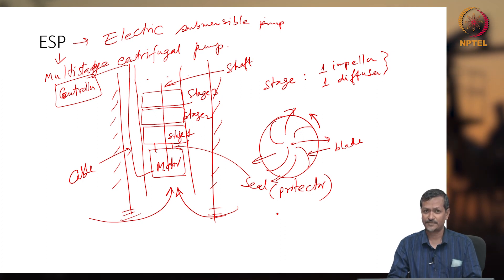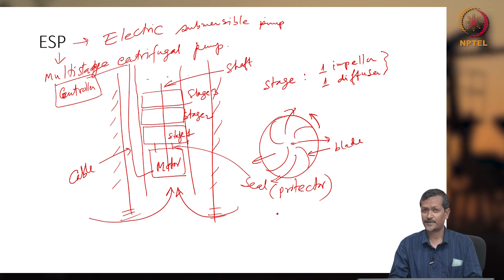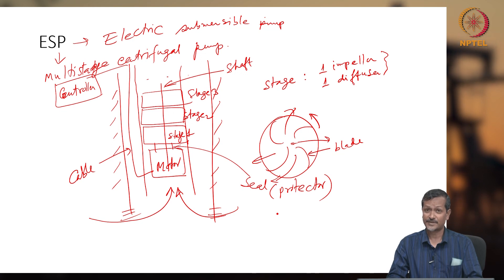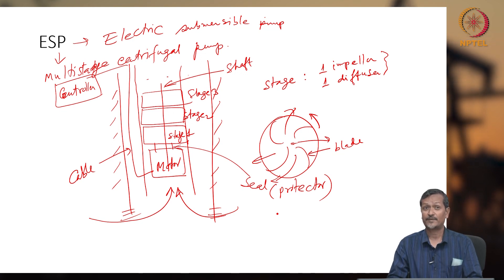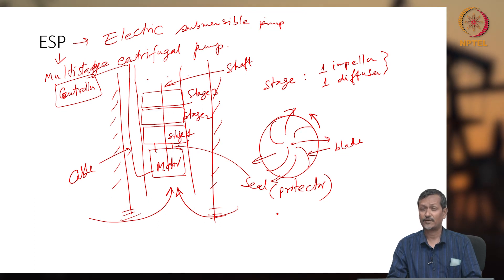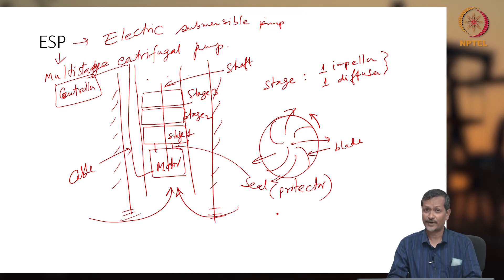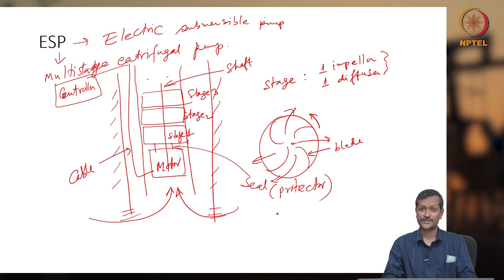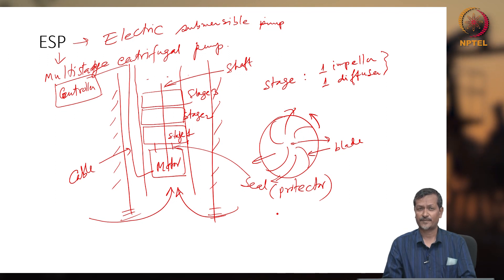ESP is also a very common pumping system used for household and agriculture applications, such as submersible pumps. For surface applications, centrifugal pumps and even multi-stage centrifugal pumps are used where you need to increase pressure while maintaining a certain flow rate — for example, 2, 3, or 4 stages of centrifugal pump for surface applications.